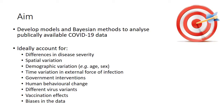Our aim is to develop effective models and Bayesian methods to parameterise those models using publicly available COVID-19 data. Ideally, these models should account for differences in disease severity, spatial variation, demographic variation, time variation in external force of infection, government interventions, human behavioural change, different virus variants, vaccination effects, and biases in the data.